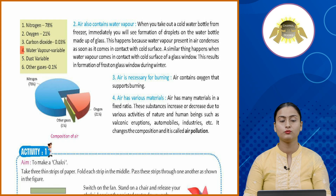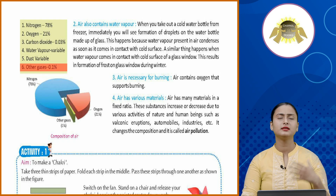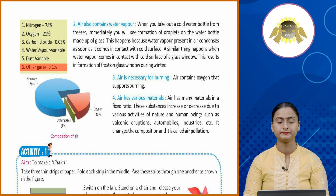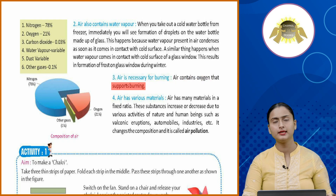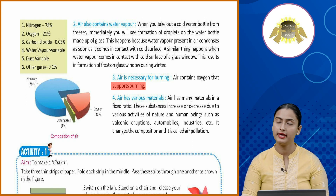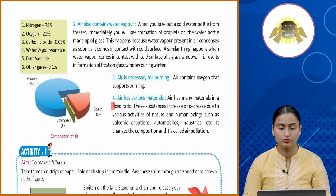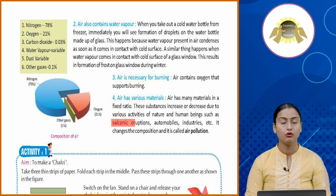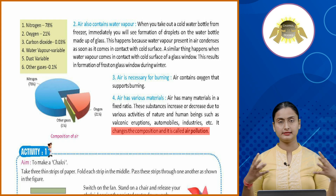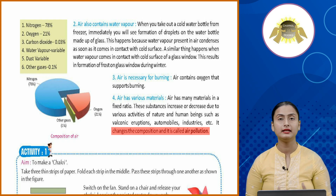The composition of air: carbon dioxide 0.03%, water vapor variable, dust variable, other gases 0.1%. Number three: air is necessary for burning — air contains oxygen that supports burning. Number four: air has various materials in a fixed ratio. These substances increase or decrease due to volcanic eruptions, automobiles, and industries, changing the composition. This is called air pollution.